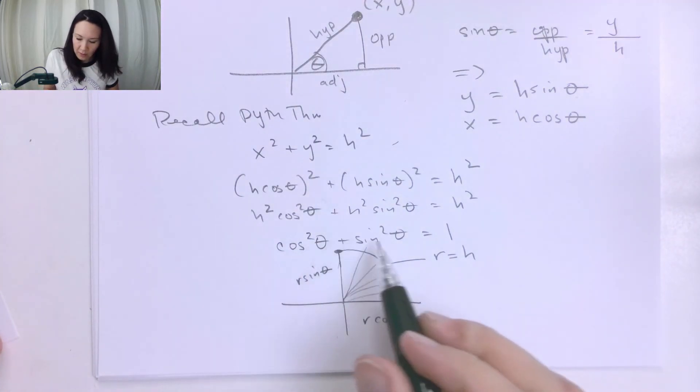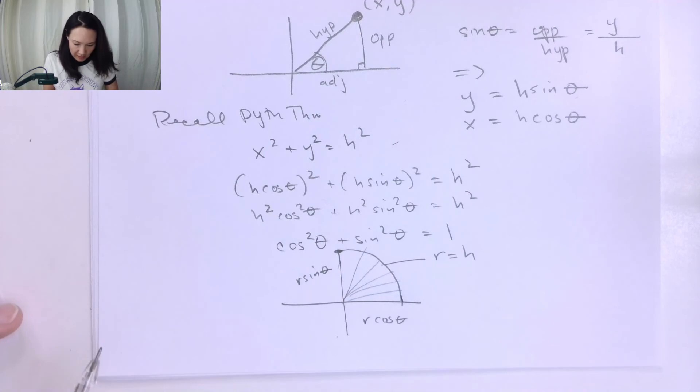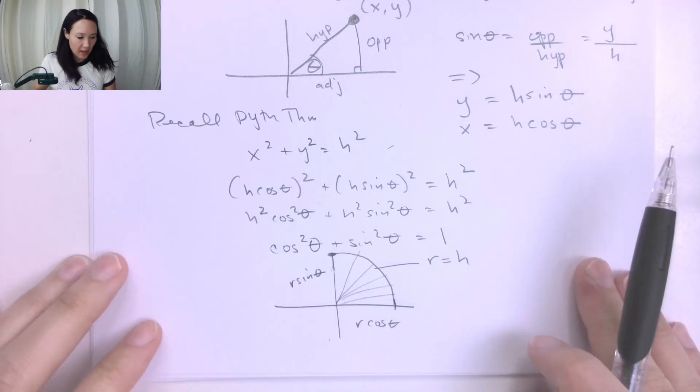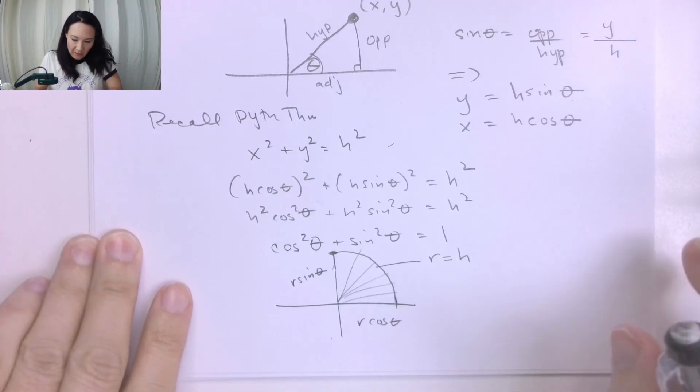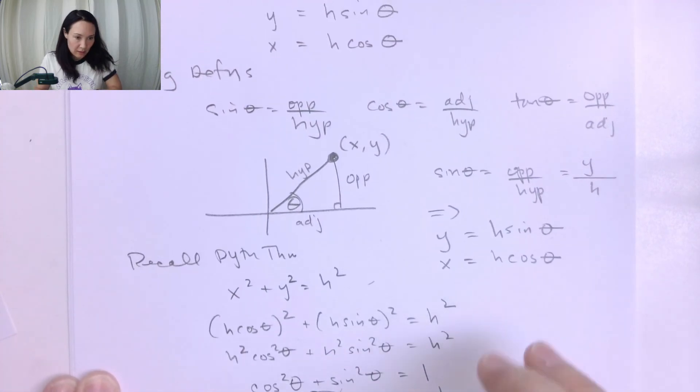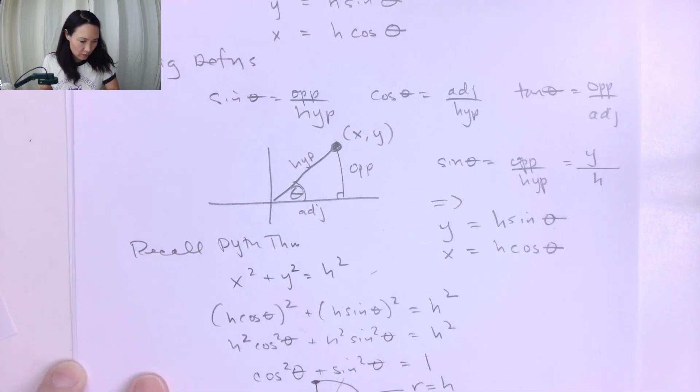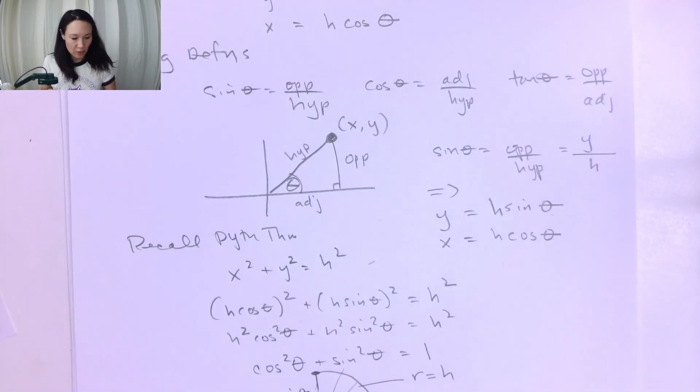So you've seen this trig identity before, and we're going to take this idea and apply it in the complex plane so that we can start to represent nonlinear circuit elements. Let me know if you have any questions about this quick trig review. In the next video, I'll show you a complex numbers review.